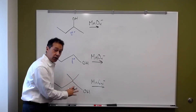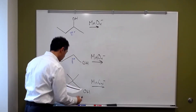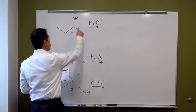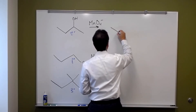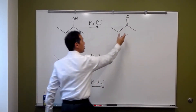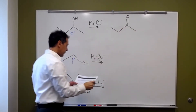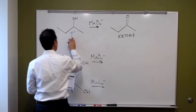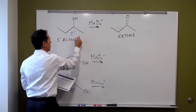So what's going to happen in our oxidation reactions? For the first one, we're going to increase the number of carbon-oxygen bonds, turning this from an alcohol into a ketone. So a secondary alcohol, when oxidized with a strong oxidizing agent, becomes a ketone.